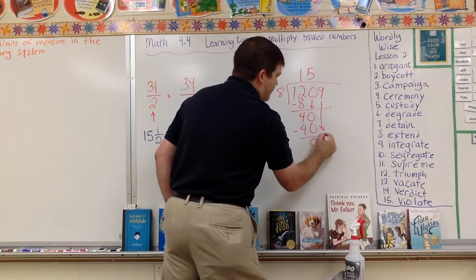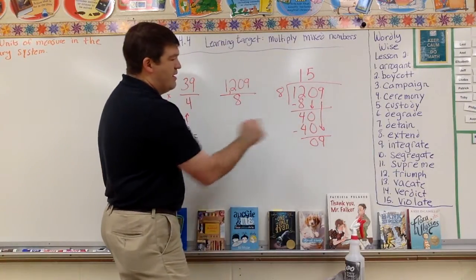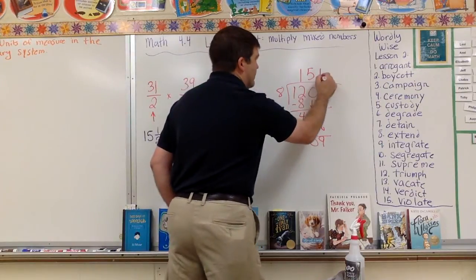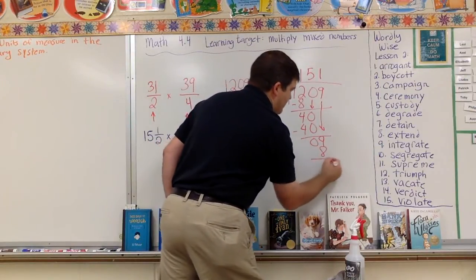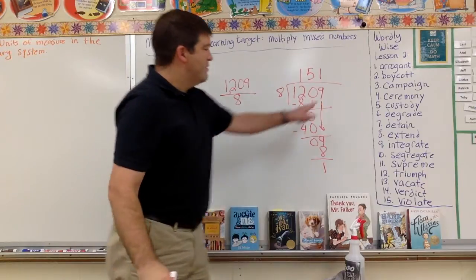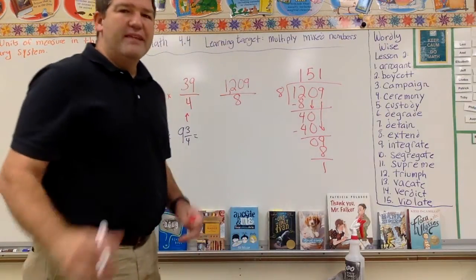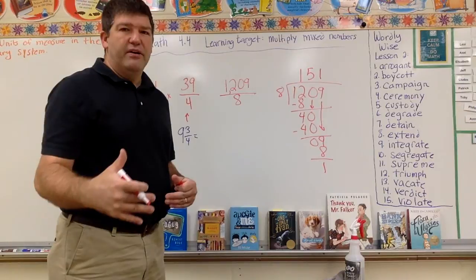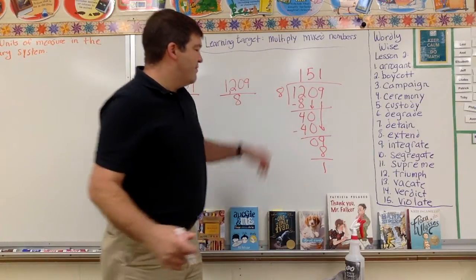Now I bring down my nine. How many times does eight go into nine? One time. One times eight is eight. Leaves me with one. There's no other numbers to bring down, so I have my remainder. But it's not just a remainder. It's the numerator, and here's my denominator.